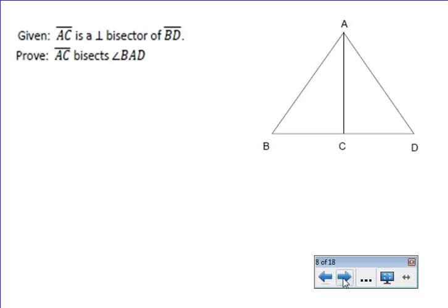When you look at this problem, the goal is to show that AC bisects angle BAD, which essentially is showing that angle BAC is congruent to angle CAD. That's our goal. If we can show that, then we've got the proof, but that isn't straightforward to show unless you can show that those two triangles are congruent.